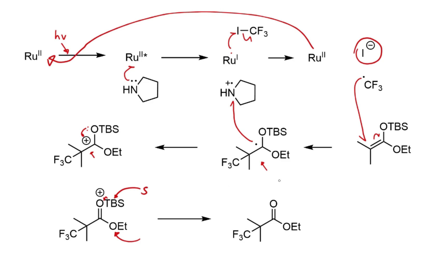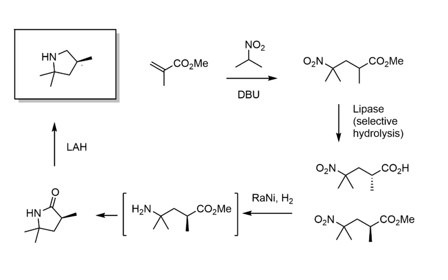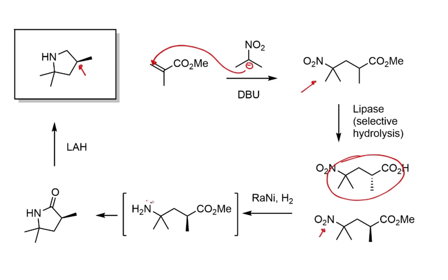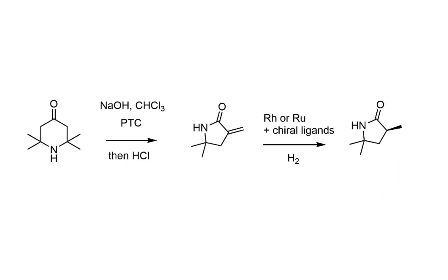Moving on to the pyrrolidine fragment, which has a chiral methyl group. The first approach used an enzyme as the source of chirality: a Michael acceptor was reacted with 2-nitropropane using DBU as base to give an intermediate adduct. An enzyme screen identified a lipase that selectively hydrolyzes only one enantiomer, allowing extraction of the unwanted enantiomer as the carboxylic acid while retaining the desired enantiomer as the methyl ester. This enantiopure building block was then treated with Raney nickel and hydrogen to reduce the nitro group, which cyclizes in situ onto the methyl ester to afford a lactam, reduced with lithium aluminium hydride.